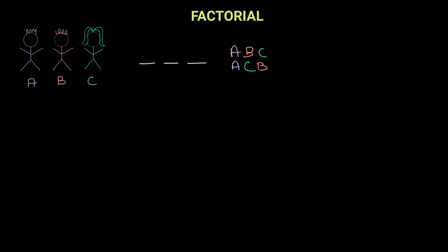However, these are not the only possibilities. We can have B standing at the beginning of the line, which can be further paired with A in the second position or C in the second position. If B and A are the first two positions, that leaves us with C in the third position. And if B and C are the first two positions, that leaves us with A in the third position.